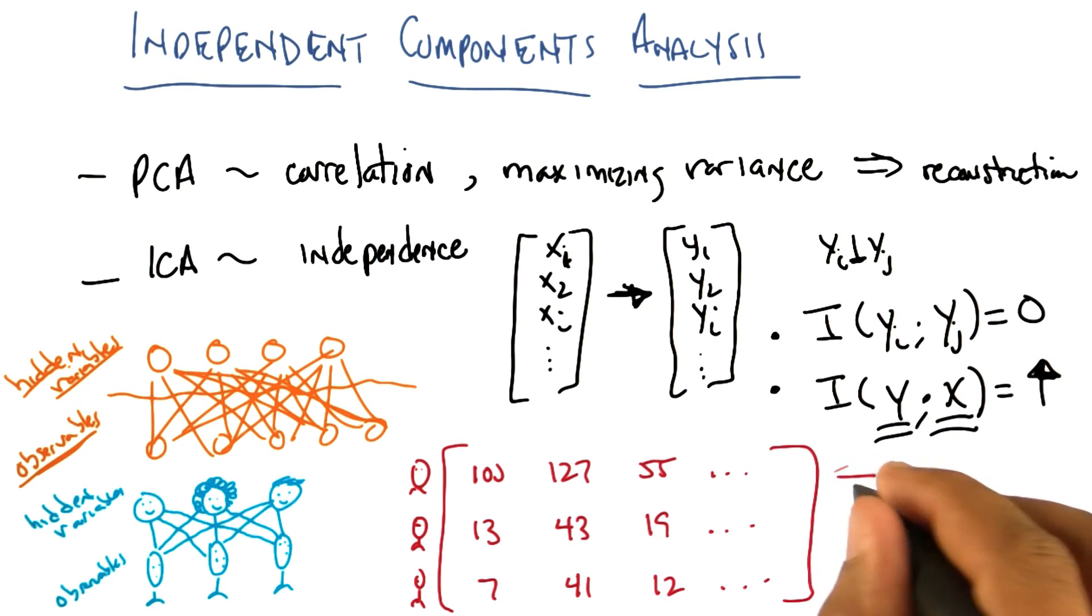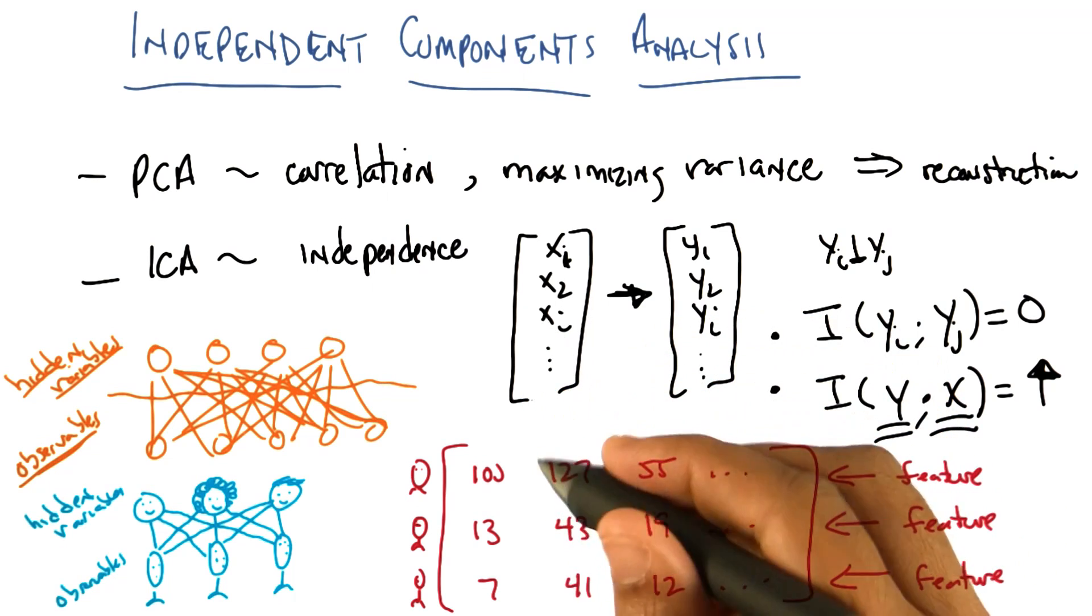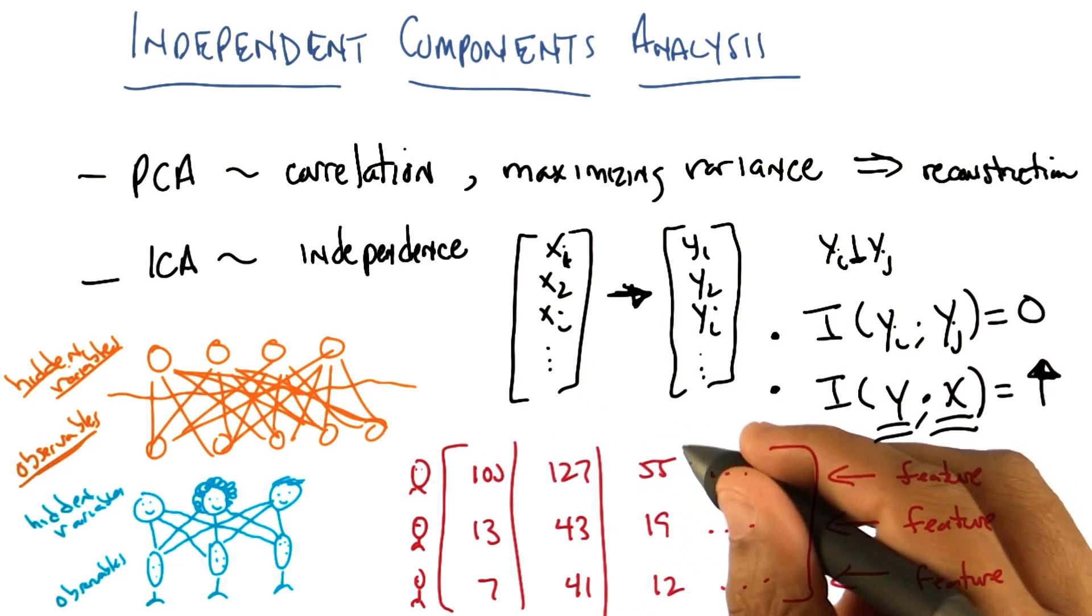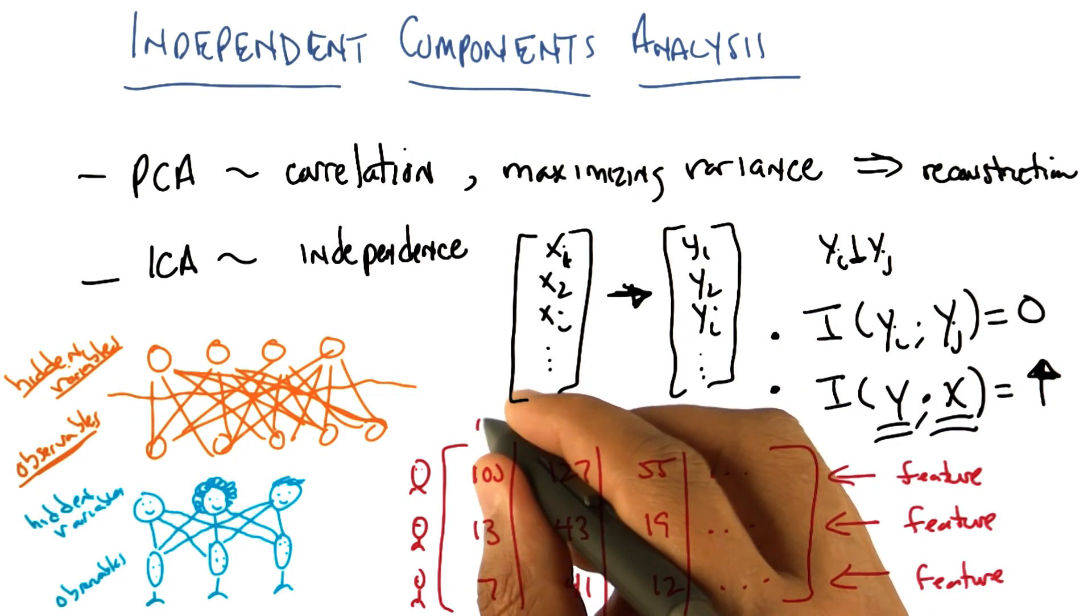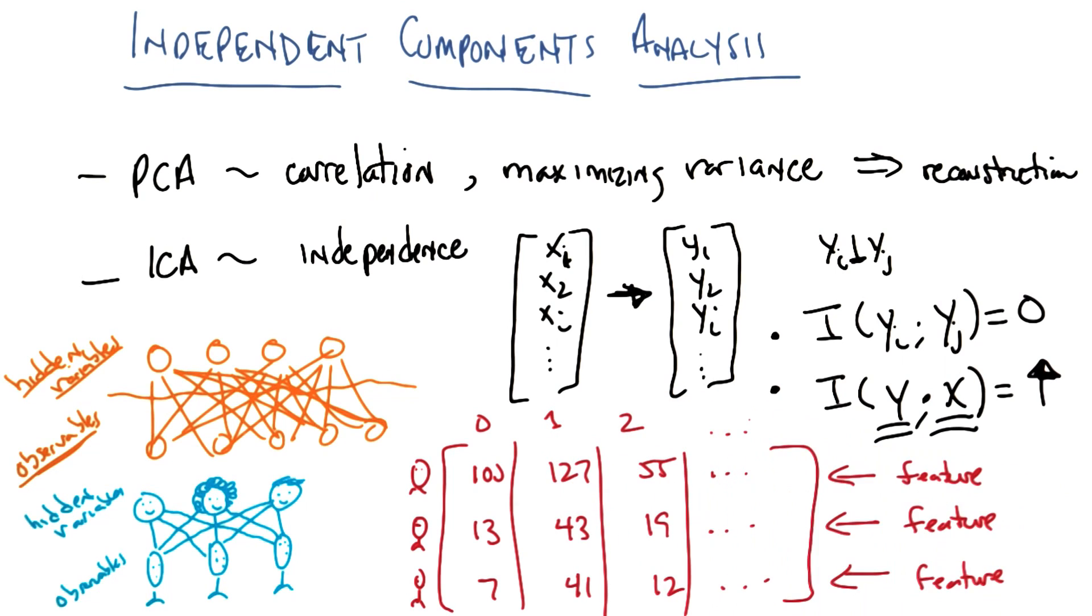And now what we have is a matrix where each row represents a feature in our original feature space. And by original here, I mean the feature space that we see, each of our microphones. And every column represents a sample. Say at time zero, time one, time two, and so on. Does that make sense?